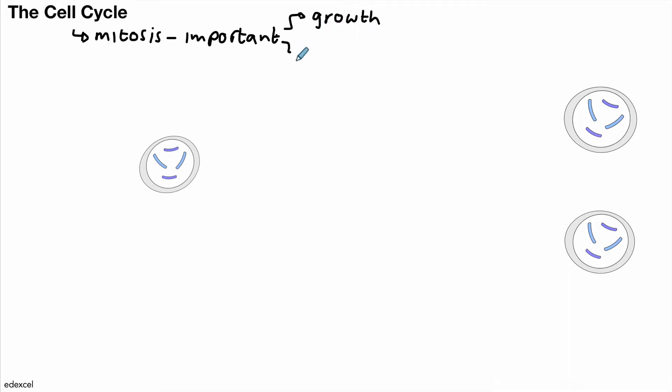Hello and welcome. Today we're going to take a look at the cell cycle, and as part of the cell cycle we're looking at something called mitosis. Mitosis is really important because it is involved in growth — so when you grow from a baby to an adult, new cells are needed. It's also important for repairing damaged tissue.